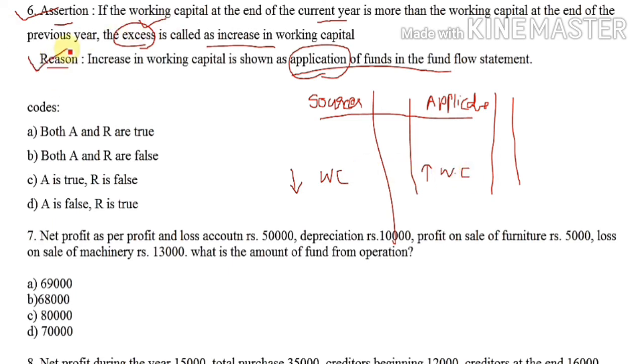In the fund flow statement, we have sources and applications of funds. Decrease in working capital appears on the sources side, and increase in working capital appears on the application side. So both assertion A and reason R are true. The first option — both A and R are true — is correct.